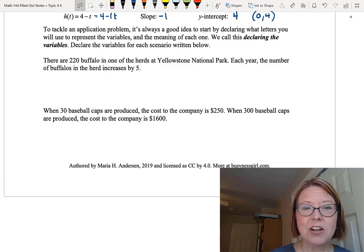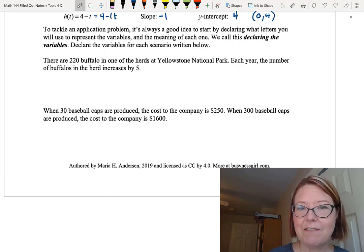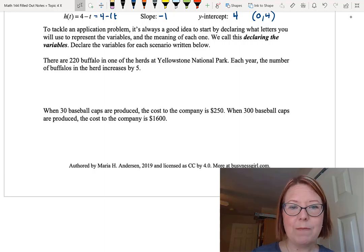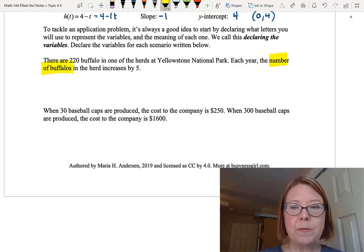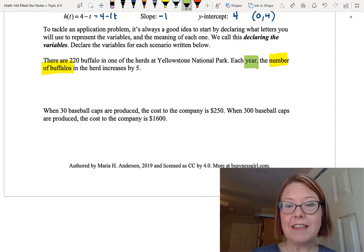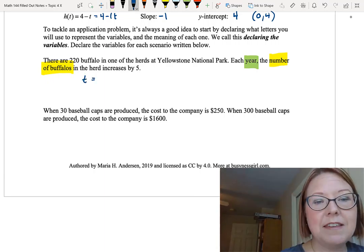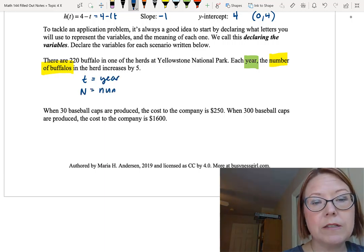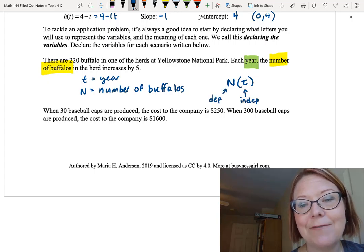Here's the first scenario. There are 220 buffalo in one of the herds at Yellowstone National Park. Each year the number of buffalo in the herd increases by 5. What are the two variables in this problem? Well, it looks like one of the variables is the number of buffaloes. We start with 200 and then it's increasing by 5. Now, do we have any control over the number of buffaloes? Well, not really. All we can do is measure that number every year, and so it is in fact years that represents the other variable in the problem. Let's go ahead and name each of those with a letter. Let's let T be the year, and let's let N be the number of buffaloes. And the function we would write from this would be N of T. In other words, T is the independent variable, and N would be the dependent variable.